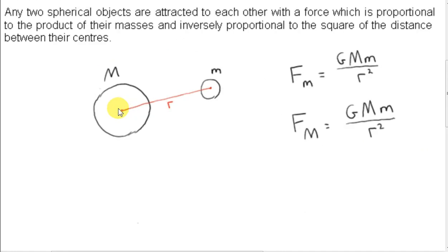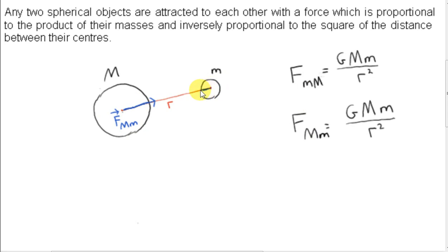Let's look at some examples. The force on each mass is the same — the force on big M is the same as the force on little m. It's an attractive force: big M is attracted towards little m. We can write it as the vector F, the force on big M due to little m. By Newton's third law, there's an equal and opposite force on little m due to big M. So Newton's third law is implicit in Newton's law of gravitation. These two forces are equal in magnitude but opposite in direction.